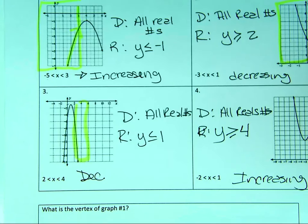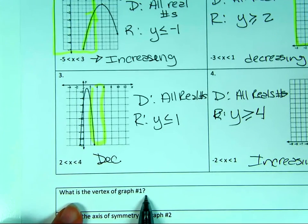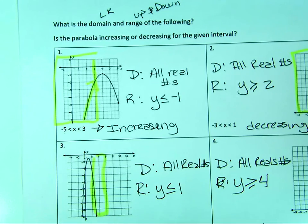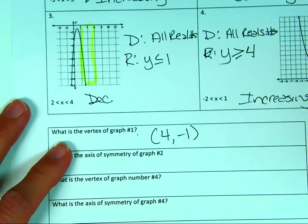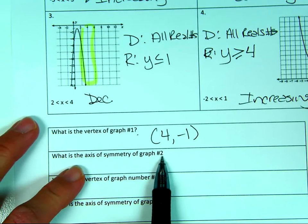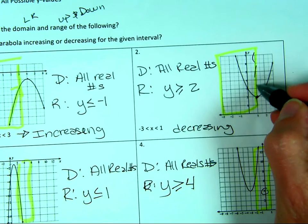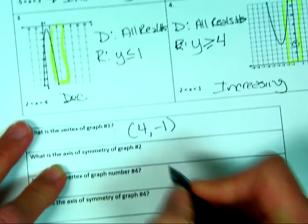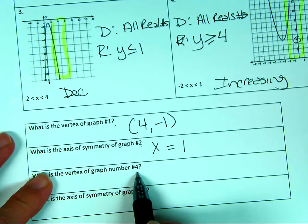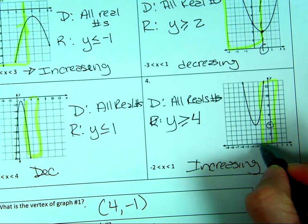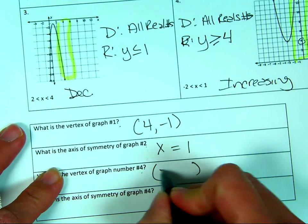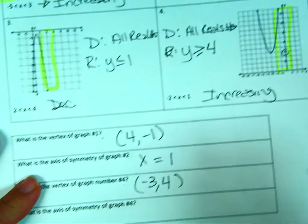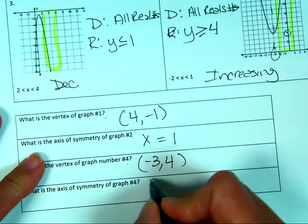Now it's asking some other questions. The vertex of graph one looks like I'm over 4 and down 1, so that's the point (4, −1) — write it as a point. The axis of symmetry of graph two: that vertical line goes right through the vertex at x equals 1, so x equals 1. The vertex of graph four is at (−3, 4). And the axis of symmetry of graph four is x equals negative three.